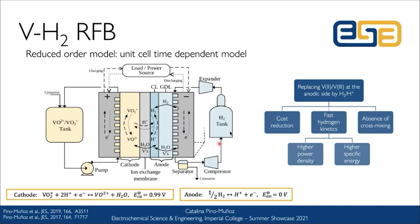This system gives a cost reduction with respect to the all-vanadium system because we now use half of the electrolyte that was required. We have fast hydrogen kinetics and also absence of cross-mixing, which means any electrolyte that crosses from the positive side to the negative side can be separated and returned to the electrolyte tank.